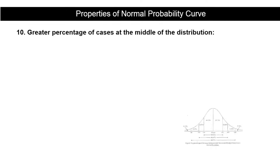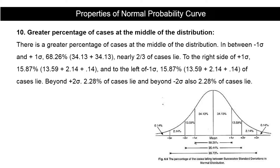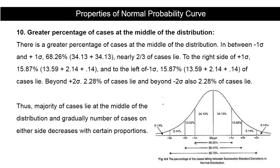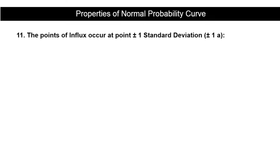The tenth property is that a greater percentage of cases lie at the middle of the distribution. Between minus one and plus one standard deviation, approximately 68.26% of cases lie (nearly two-thirds). To the right of plus one, 15.87% of cases lie, and to the left of minus one, 15.87% lie. Beyond plus two and beyond minus two, 2.28% of cases lie on each side. The majority lie at the middle, and the number of cases decreases gradually on either side.